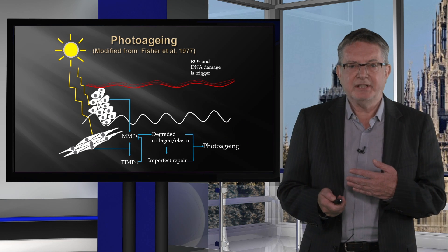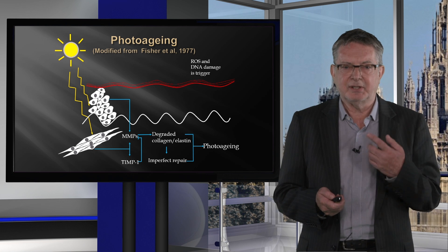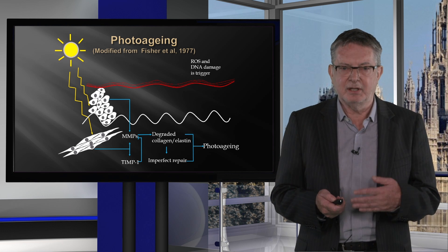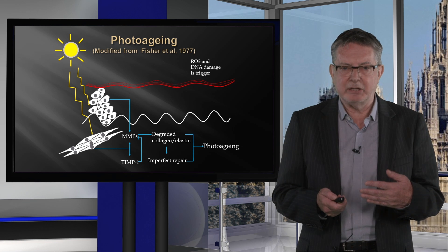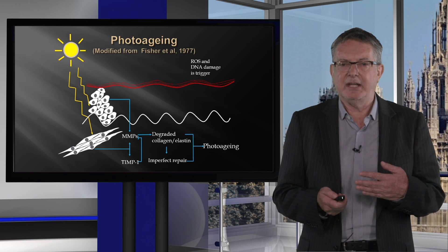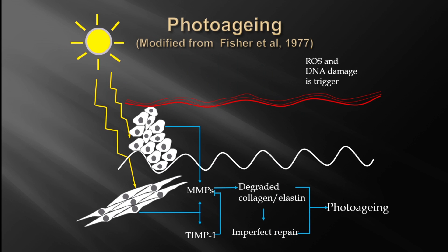Essentially, ultraviolet radiation hits cells in the epidermis and dermis, inducing the production of matrix metalloproteinases. These enzymes degrade collagen and elastin, resulting in photoaging including wrinkling and loss of skin function. The triggers for MMP production include reactive oxygen species and DNA damage.